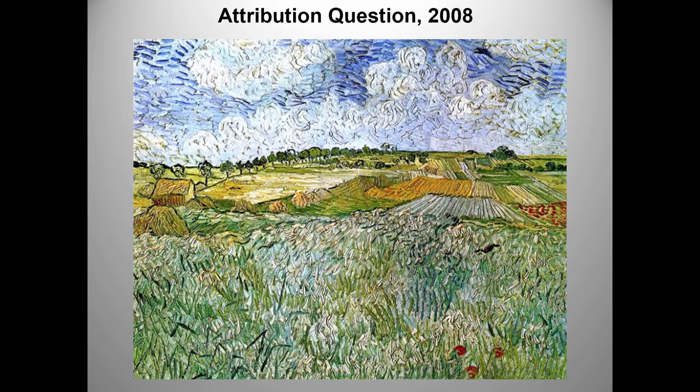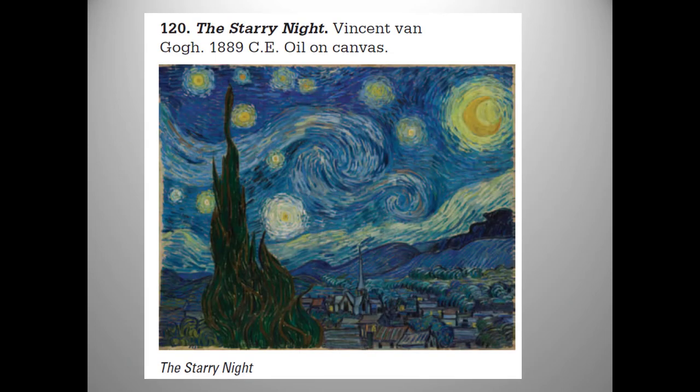For example, this was the image on the 2008 attribution question from the old curriculum. Who's the artist? What is our required work? Think back to what you did over the summer. You should get so lucky, right? But you probably won't. Since the new curriculum started up with the 2016 test, for two years the attribution questions required students to identify culture. Last year's test featured an architect.